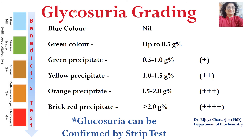Glycosuria can be graded by Benedict's test. This is a semi-quantitative test because it gives us a range of sugar — an approximate concentration of reducing sugar present in urine.